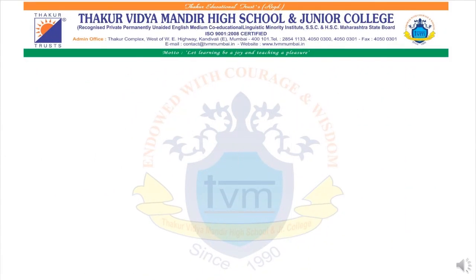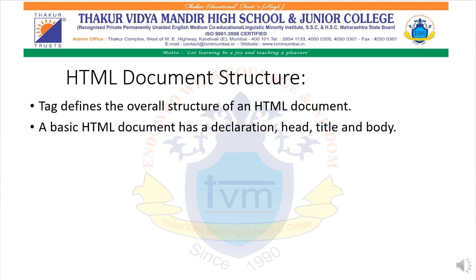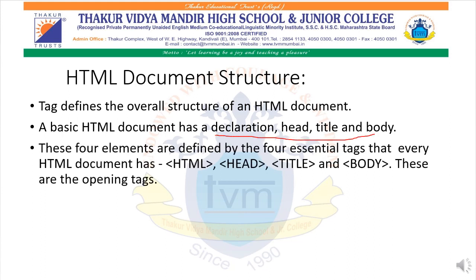Now we will understand about HTML document structure. Tags define the overall structure of an HTML document. A basic HTML document has a declaration, head, title, and body. These four elements are defined by four essential tags that every HTML document should have: first, the HTML tag; second, the head tag; third, the title tag; and fourth, the body tag.